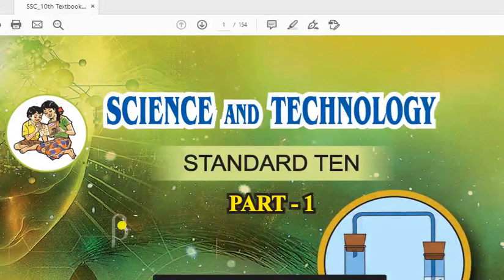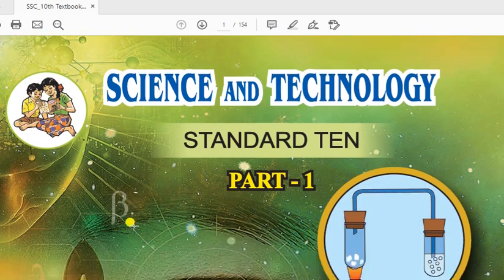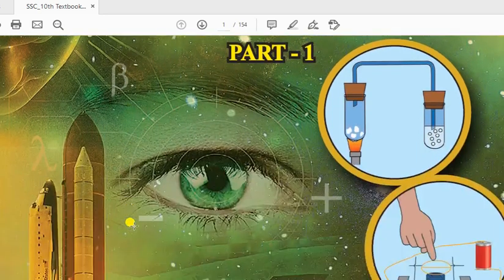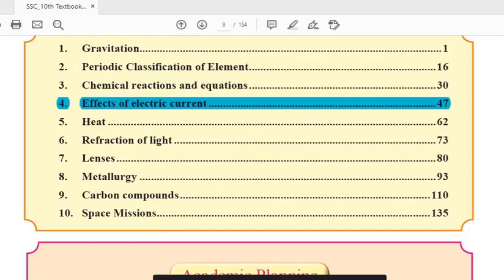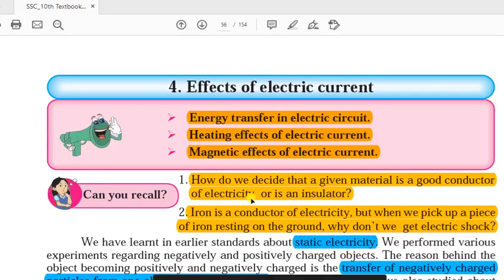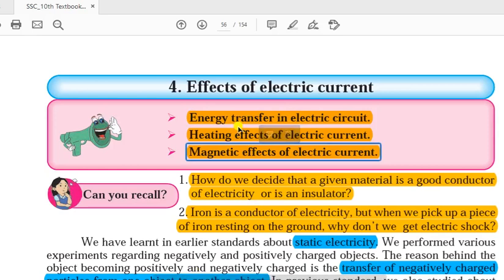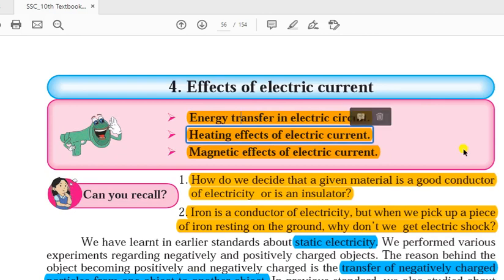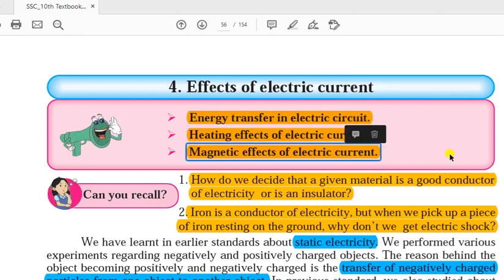Hello students, today we are starting a new chapter of Science and Technology, Standard 10 Part 1. The name of the topic is 'Effect of Electric Current.' In this chapter we are learning three important concepts of electric circuit: one is effect or energy transferred in electric circuit, second is heating effect of electric current, and third is magnetic effect of electric current.